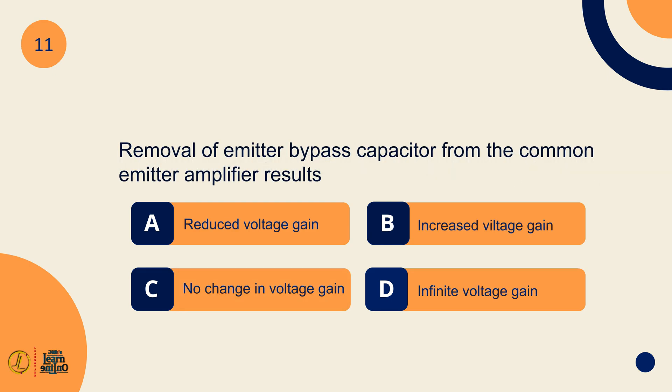Removal of emitter bypass capacitor from the common emitter amplifier results in reduced voltage gain.